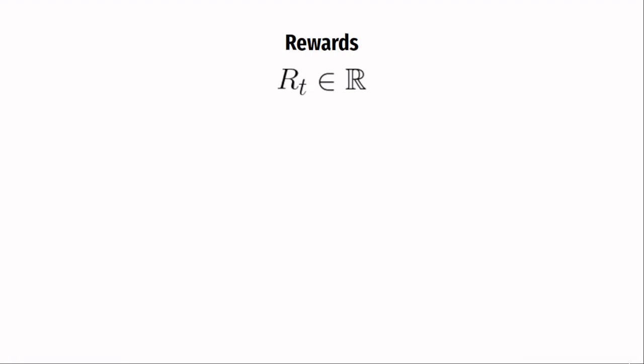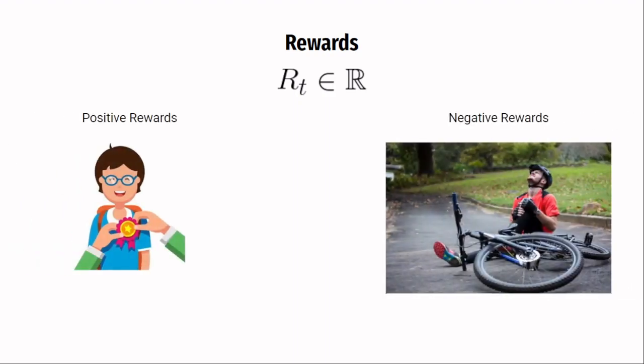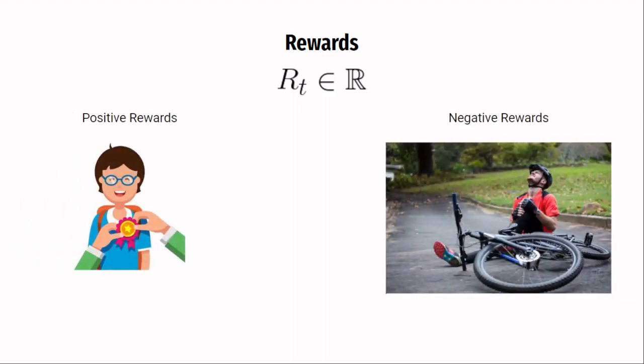The reward signal defines the goal of a reinforcement learning problem. This signal defines what are the good and bad events for the agent. The rewards can be positive or negative based on whether the agent is taking the right actions or diverting from them. As an analogy, compare the positive rewards to dopamine release and compare the negative rewards to the pain incurred when you fall off a bicycle because of your mistake.